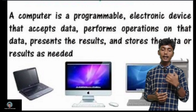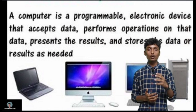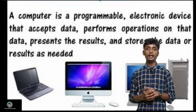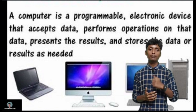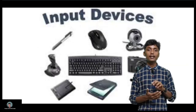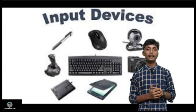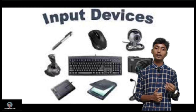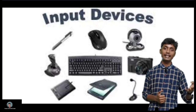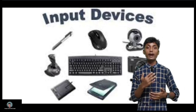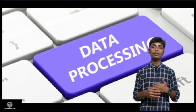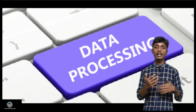What is a computer? A computer is a programmable electronic machine. It accepts data and instructions through the input device. Input devices include the keyboard, mouse, ball pen, and scanner. After you manipulate the data, it goes through the process, and after that you get the output.